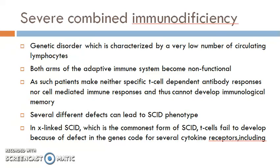Because SCID patients cannot develop immunological memory, there are several different defects which can lead to the SCID phenotype. In X-linked SCID, which is the commonest form, T-cells fail to develop because of a defect in genes encoding several cytokine receptors.